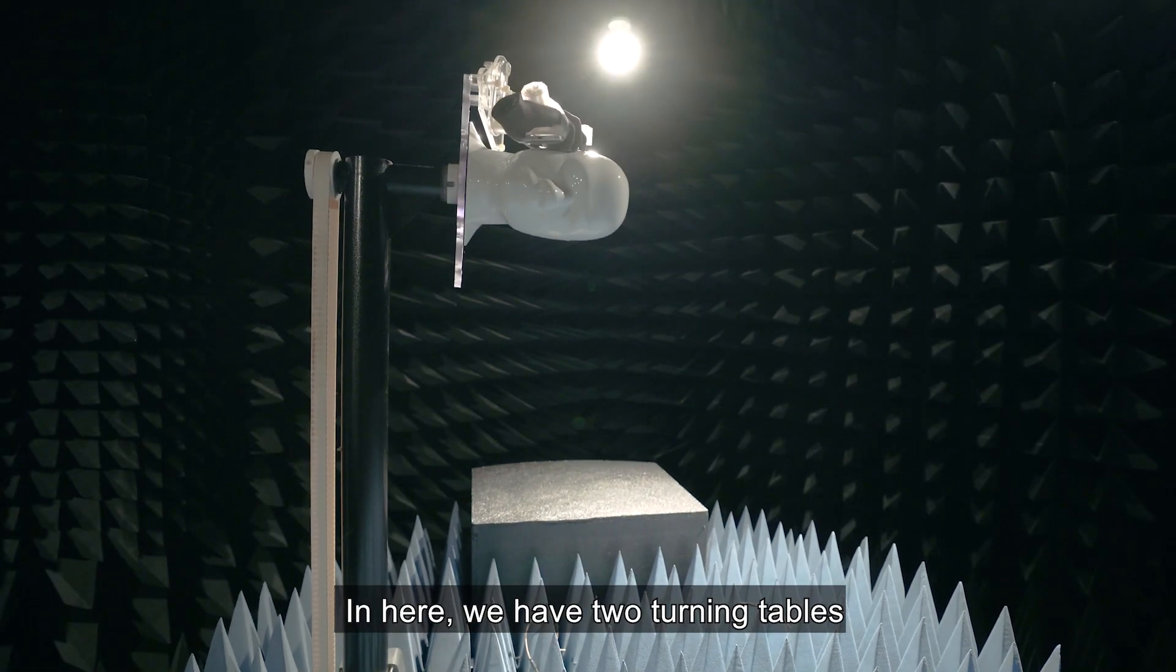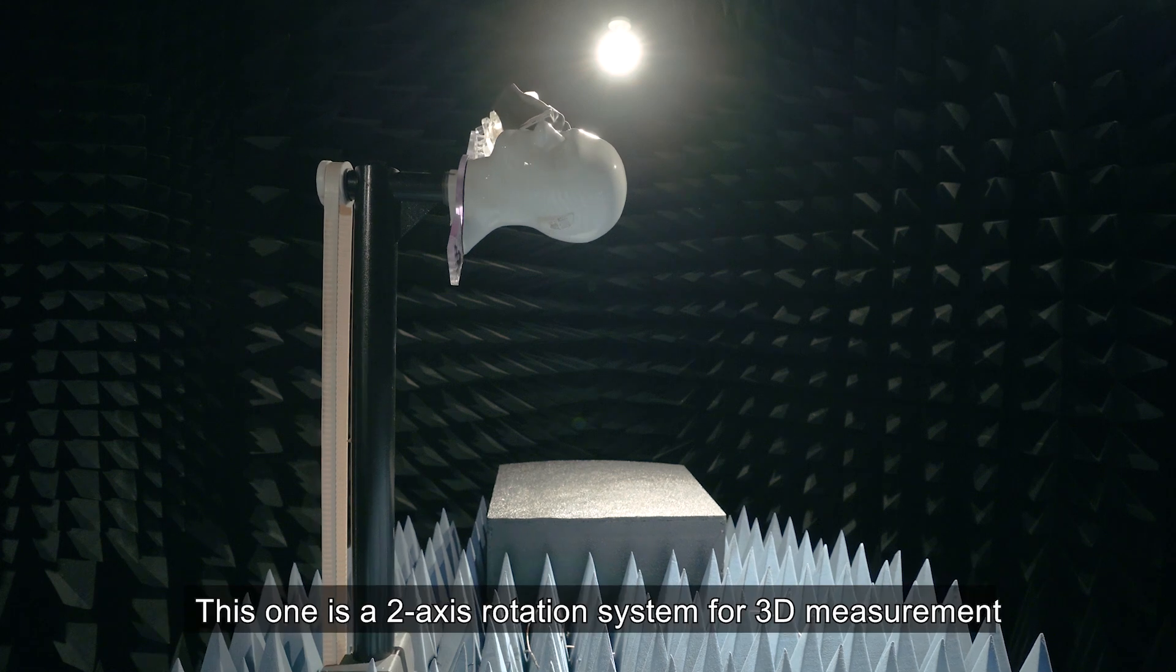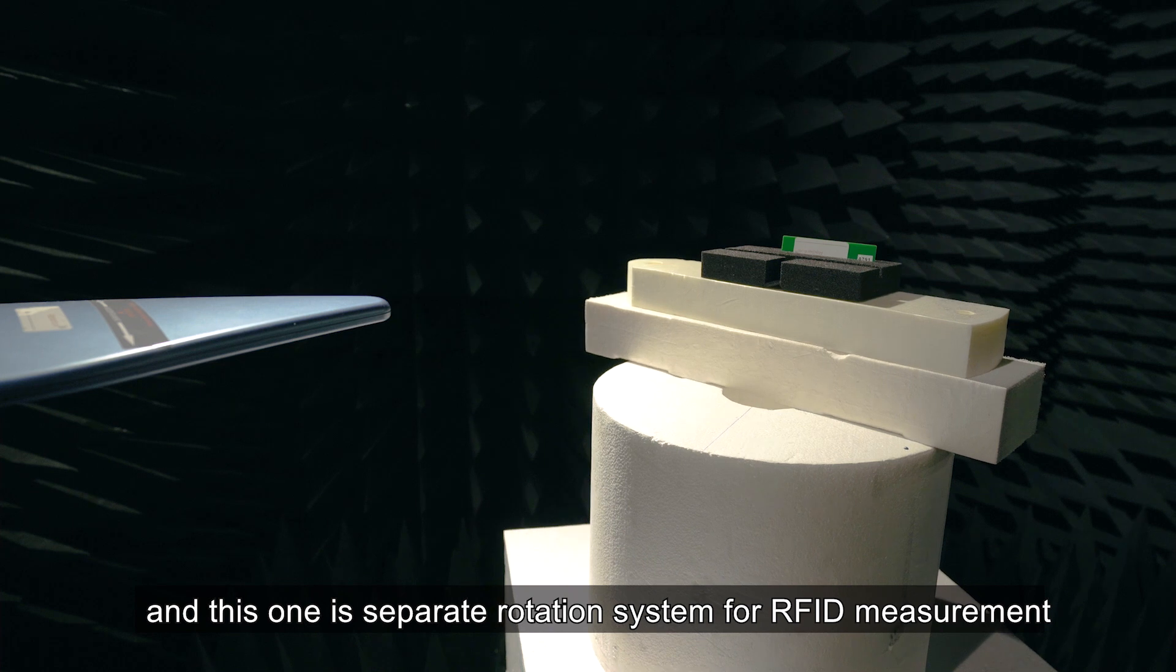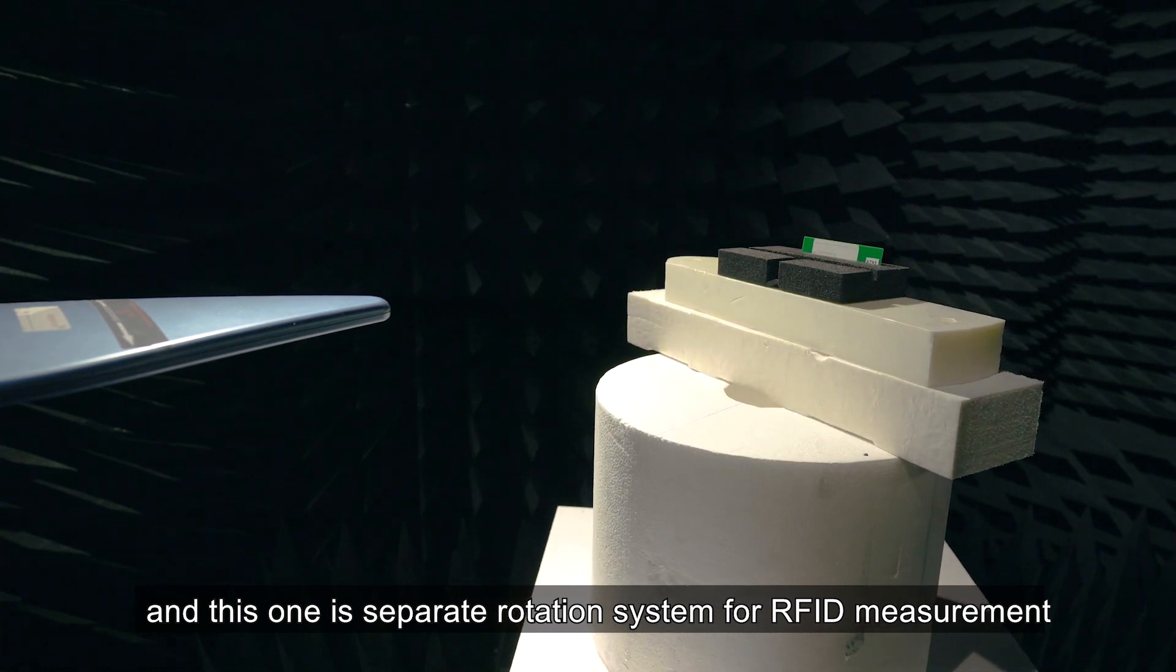In here we have two turning tables. This one is a two-axis rotation system for 3D measurement and this one is a separate rotation system for RFID measurements.